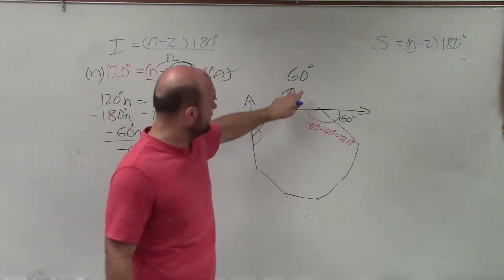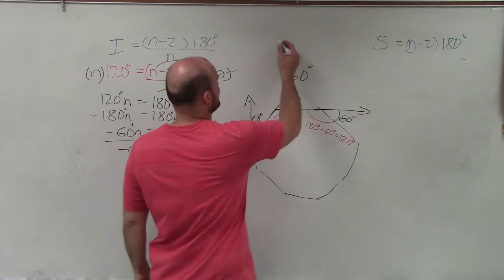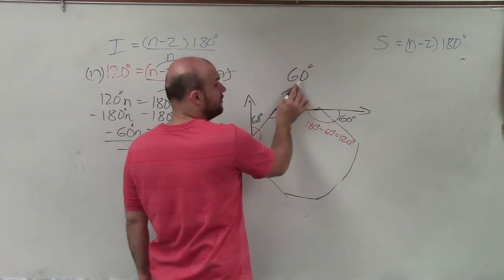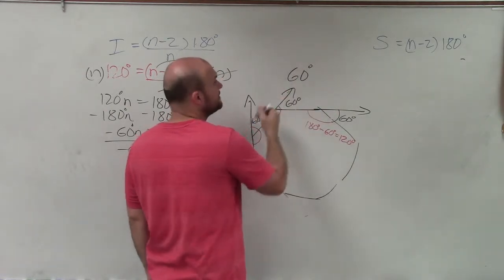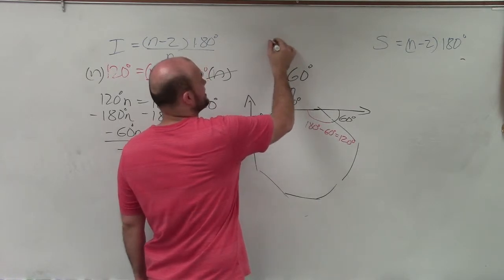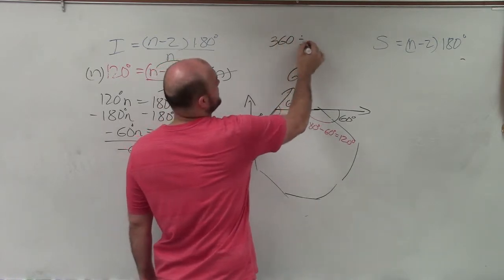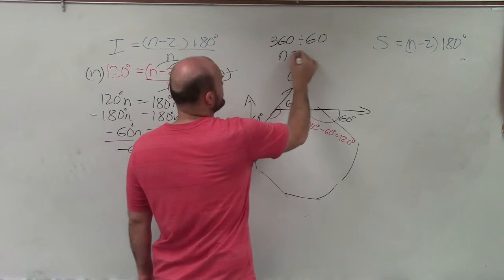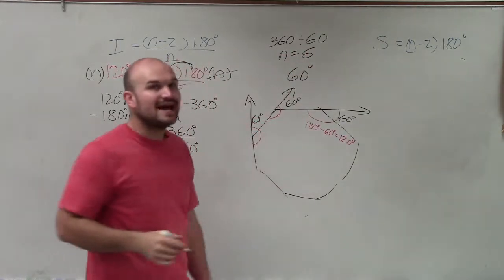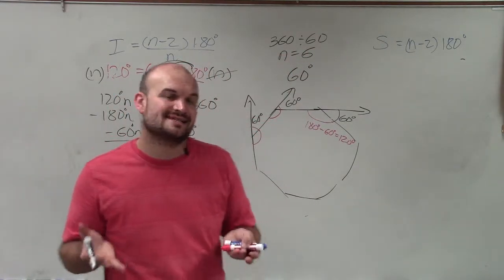So therefore, if I know the sum of the exterior angles is 360, and I know the one exterior angle is 60, how many of them do I have? So all I simply need to do is just take 360 degrees and divide it by 60. Well, of course, that's going to give us six exterior angles, which will tell us we'll have six sides.